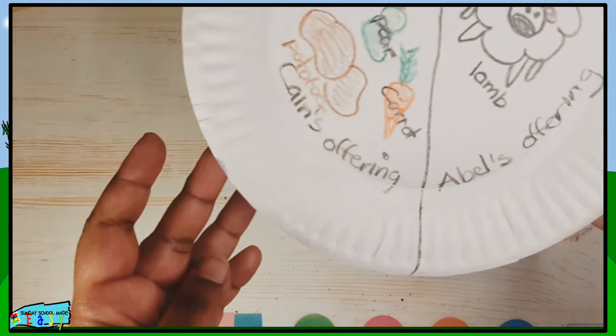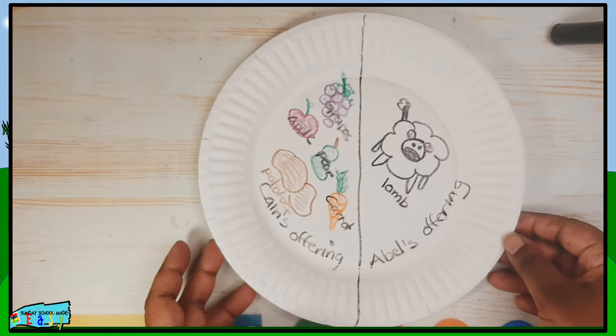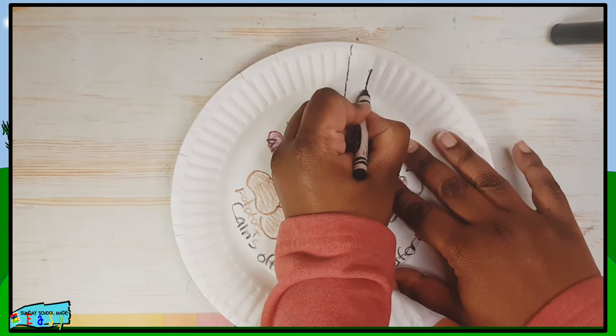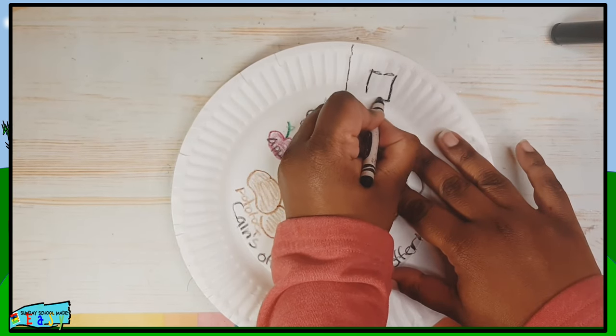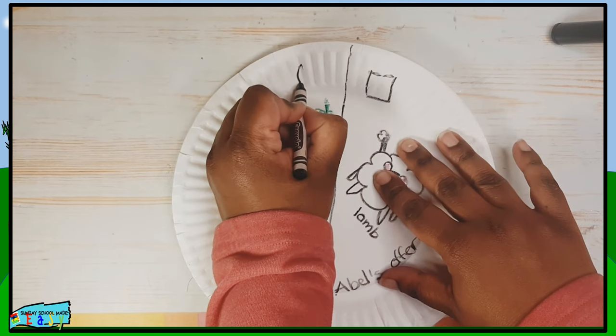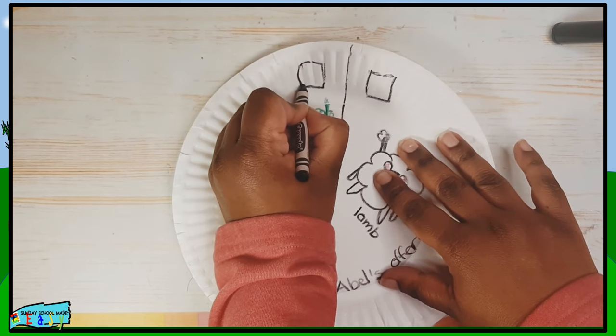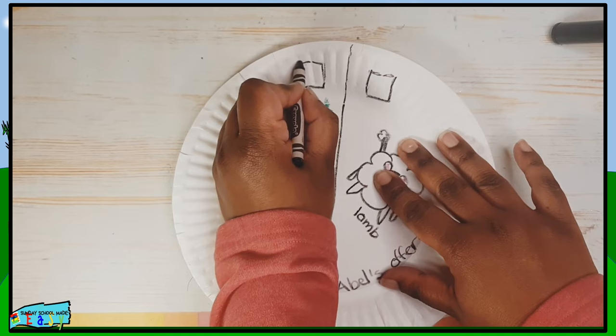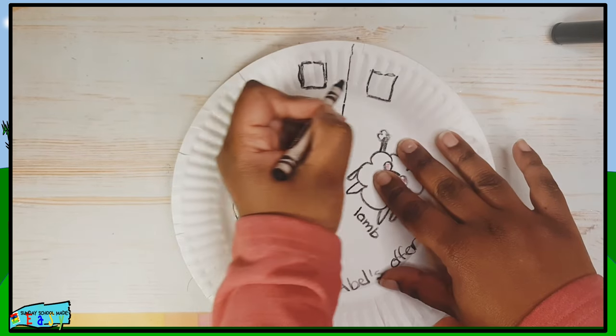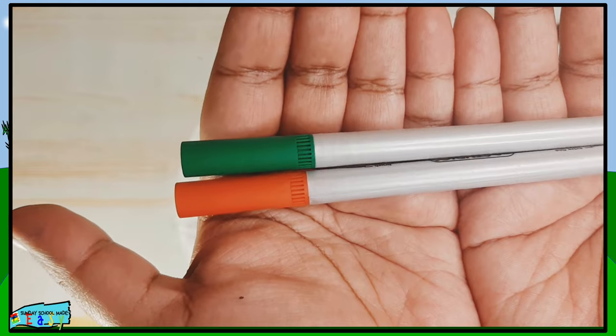Now we're going to add to this to make it a little bit more interesting. We are going to make a box on top of each section and this will just represent which offering was actually favored and which one was rejected.